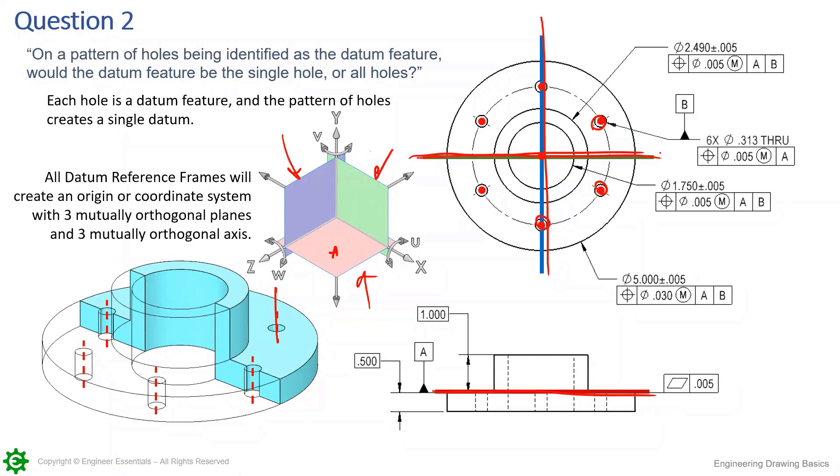Even though we're using a bolt pattern as a datum feature, the datum that creates is either going to be an axis and a plane or two planes. Whatever is easiest for you to view, but we're still getting this origin, this datum reference frame, this perfectly orthogonal datum reference frame that this irregular part is getting locked into.